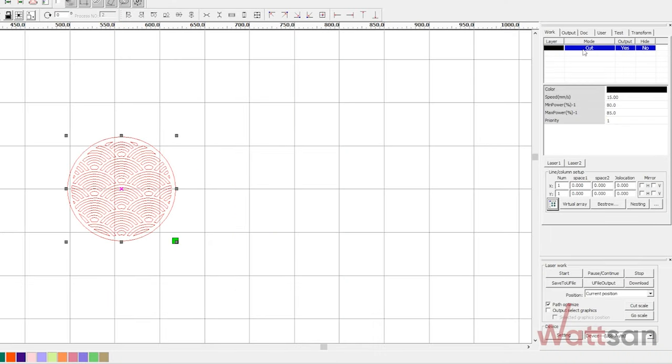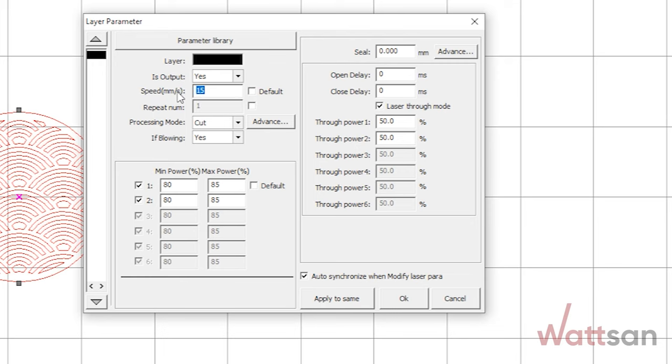First of all, we need to check power and speed settings. Power and speed settings should be selected liberally, in case a laser beam hits a knot or an area with a thick layer of glue.